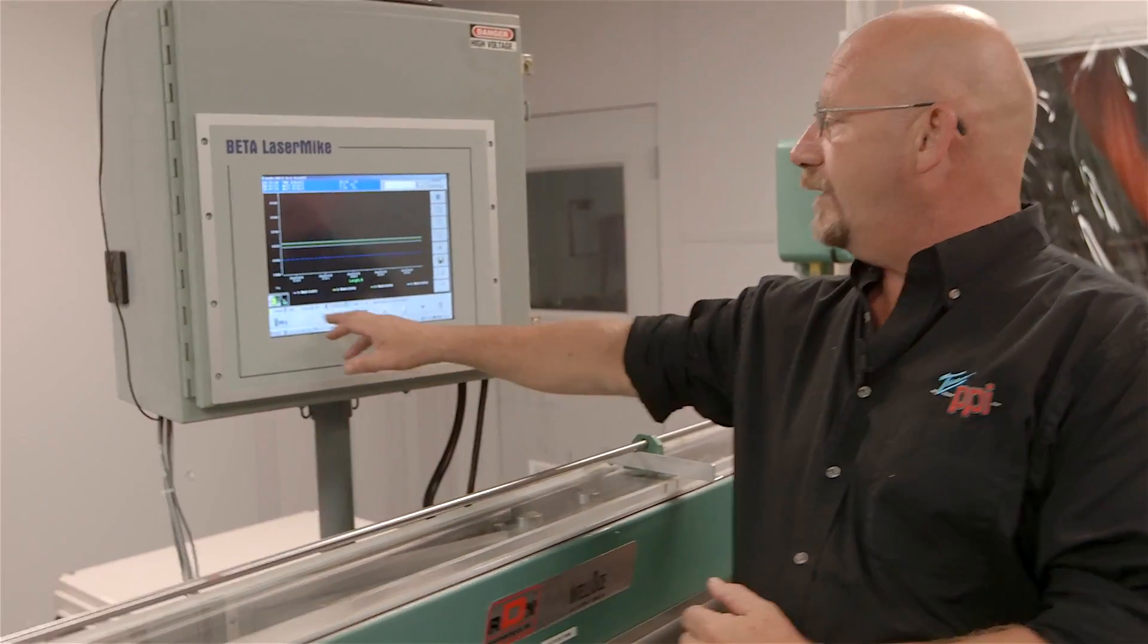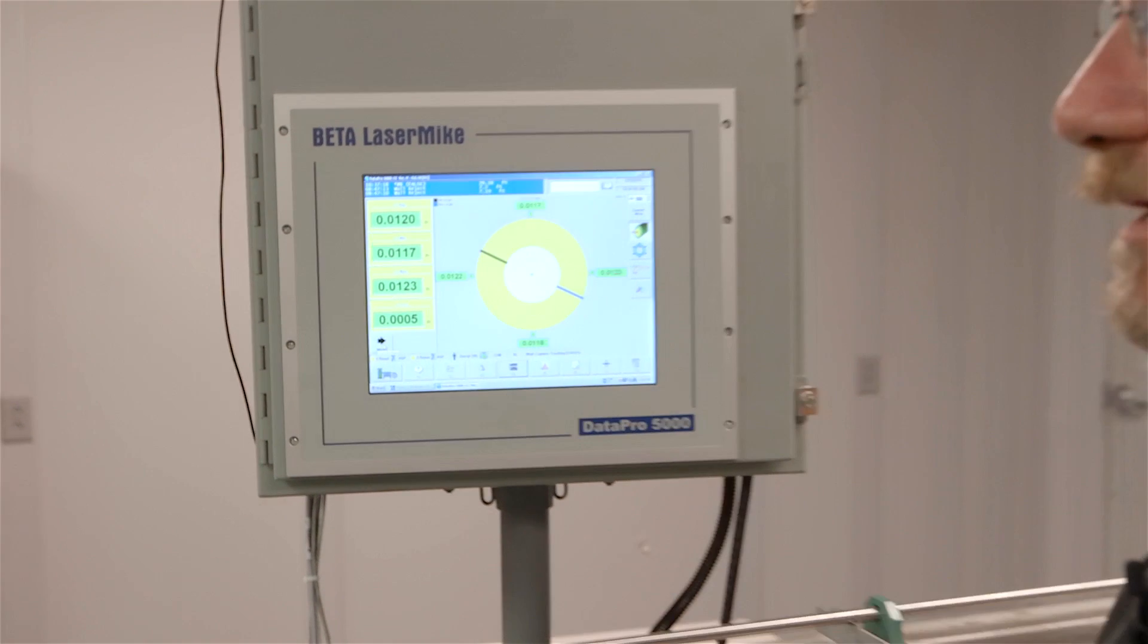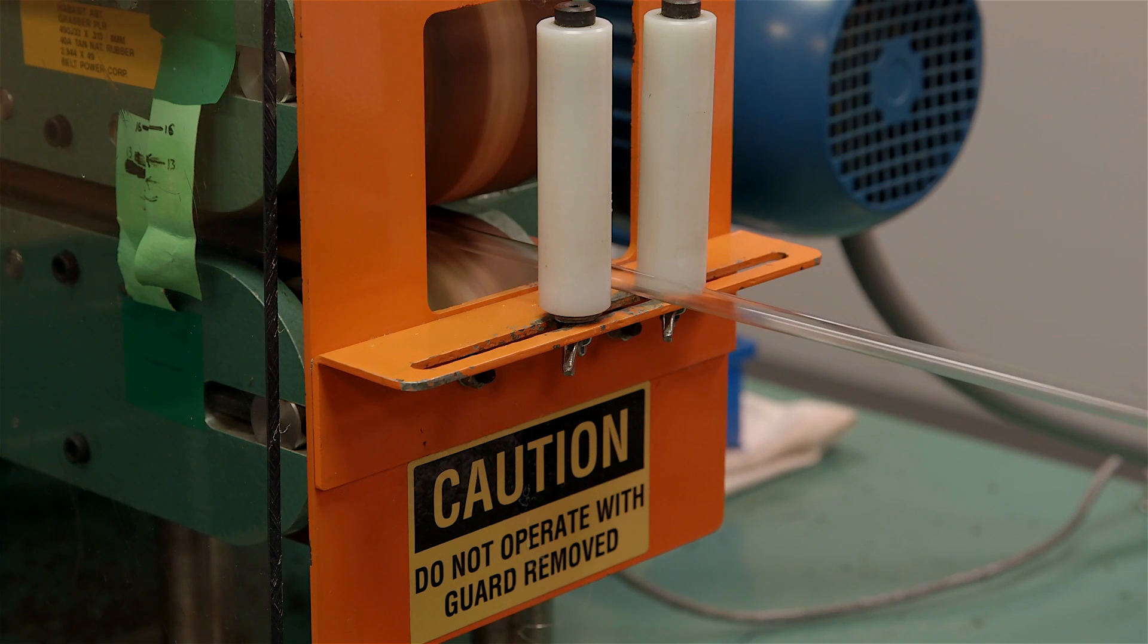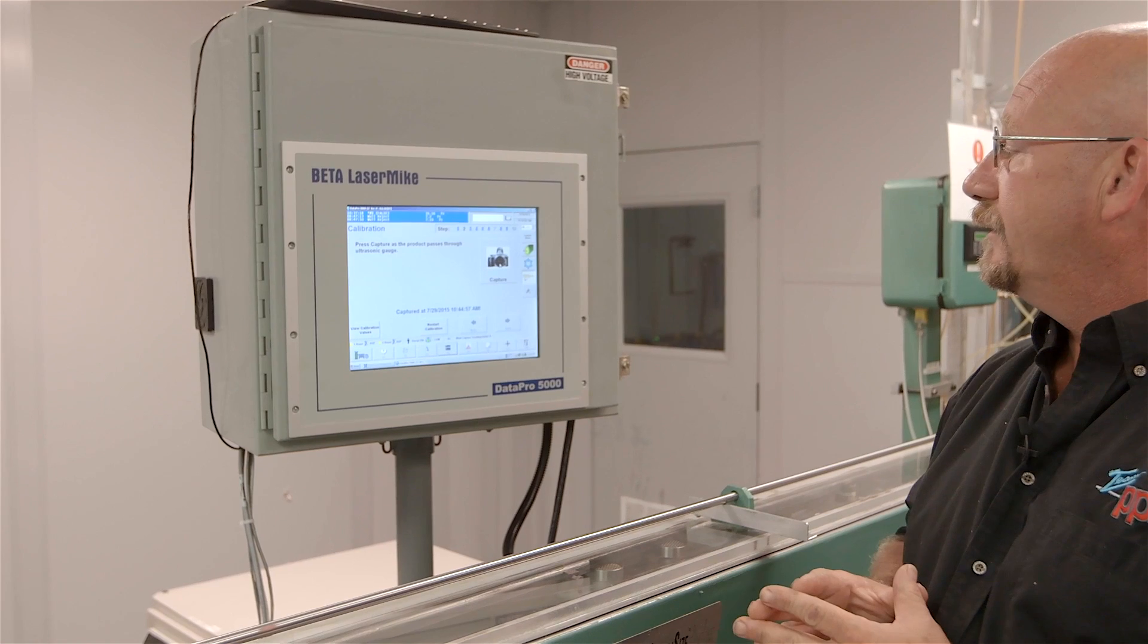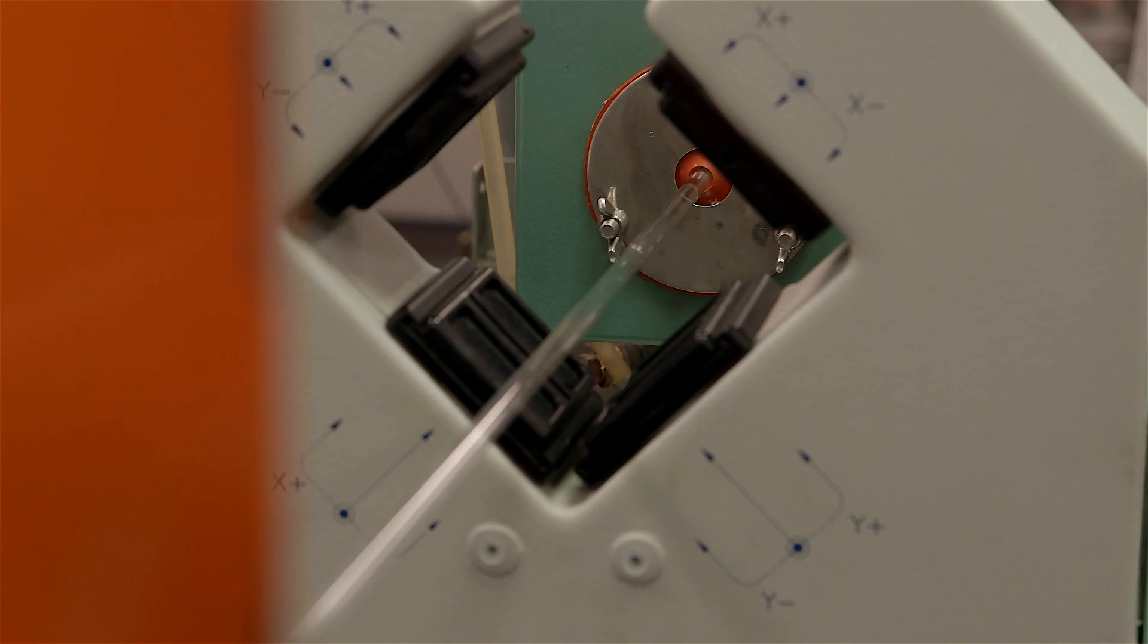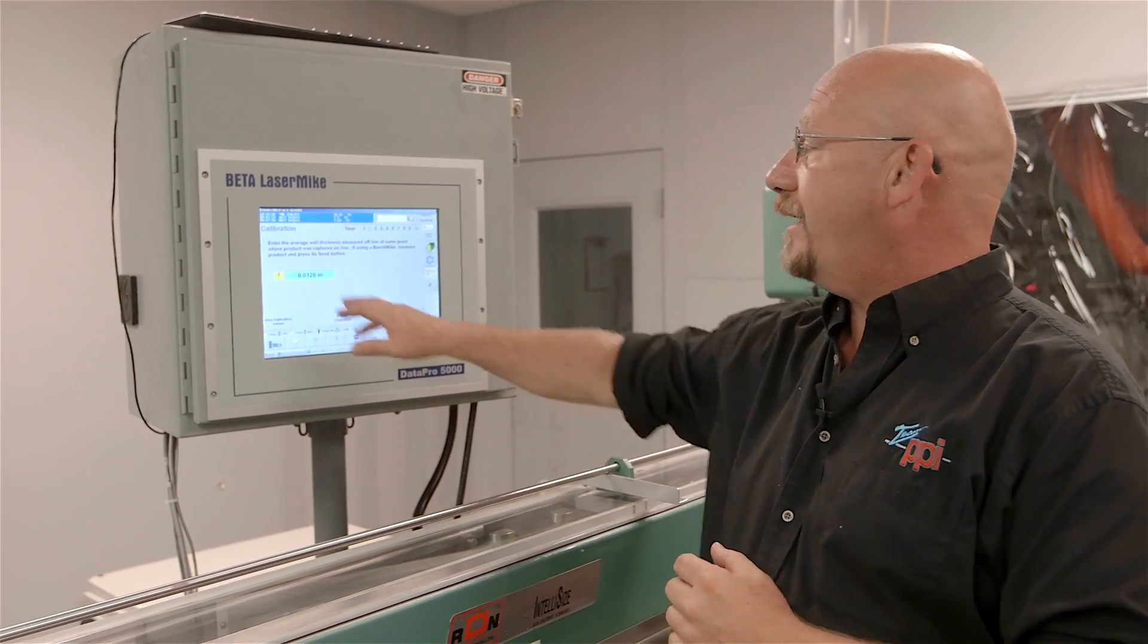What we do here is when we set up the beta laser mic, we will go ahead and get the line running. So what we're doing is basically setting up calibration for the ultrasonic. So what we'll do is we'll take a snapshot of the product, we'll grab that product, measure it in four locations, divide by four, and then we'll actually come up with what the ultrasonic is reading, that production part, at that time.